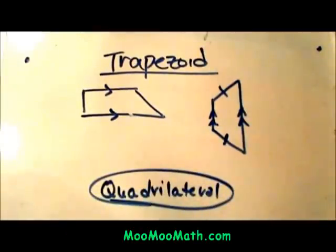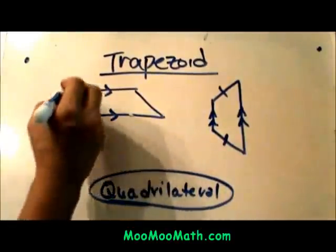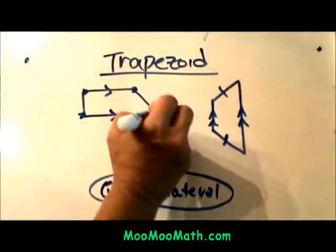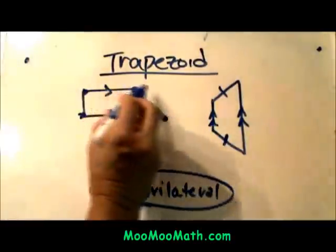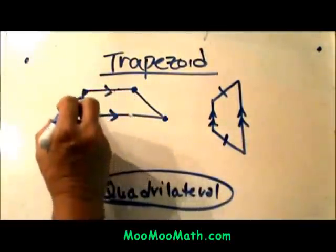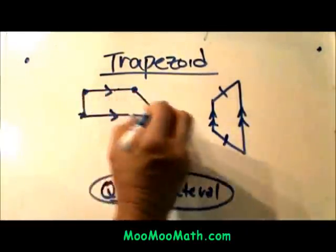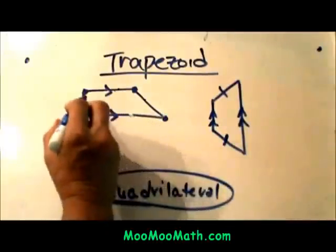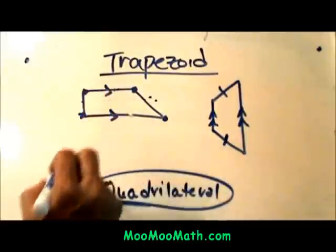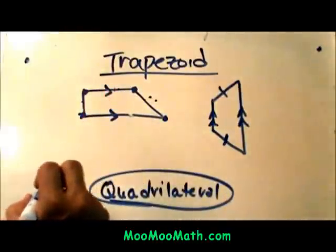It is a quadrilateral that has two sides that are parallel — in other words, one pair of sides that is parallel. So up here I have drawn a trapezoid, a very archaic picture of one, but just so you can see we have four sides and we have two sides that are parallel and two that are non-parallel. Notice these two sides are not parallel to each other and these two sides are parallel to each other.